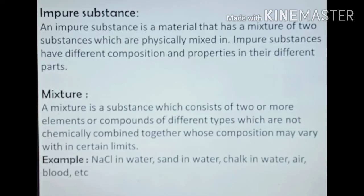Pure substances are of two types: elements and compounds, which will be discussed in the next session. An impure substance is a material that has a mixture of two or more substances which are physically mixed together. Impure substances have different compositions and properties in their different parts. A mixture consists of two or more elements or compounds of different types which are not chemically combined together, and whose composition may vary within certain limits. Examples include NaCl in water, sand in water, chalk in water, air, blood, and so on.